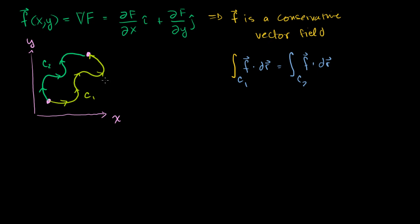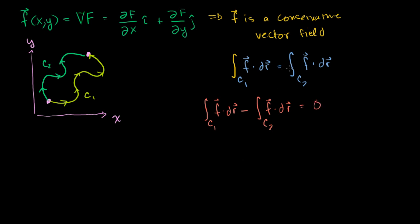Now what I want to do in this video is a little extension of that takeaway, and it's actually a pretty important one. I'll rearrange this equation: the line integral on path C1 of F dot dr, minus the line integral along C2 of F dot dr, is going to be equal to 0. All I did is subtract the C2 integral from both sides.